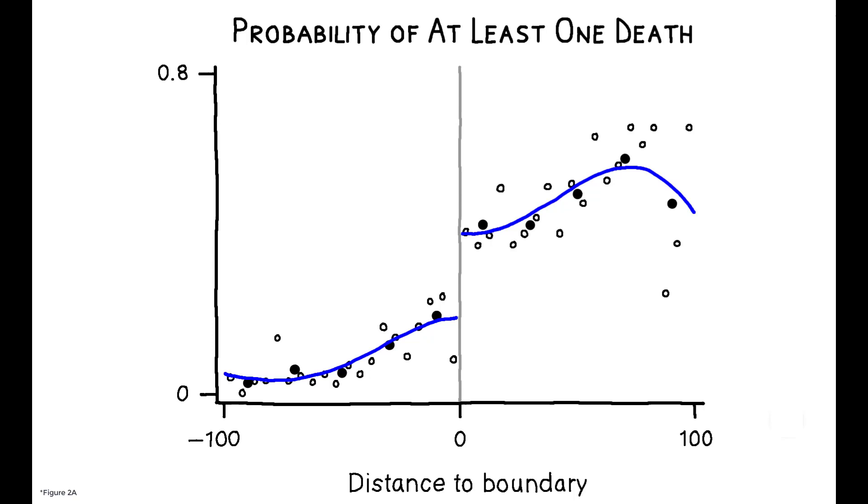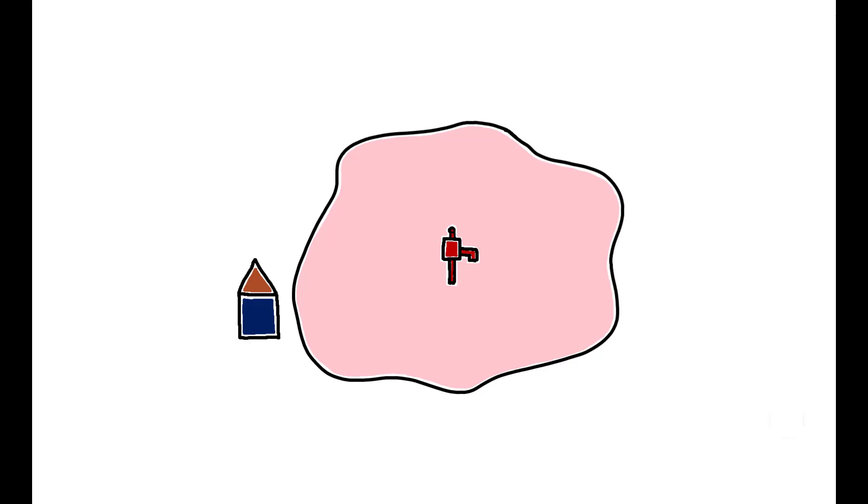This discontinuity suggests a strategy for estimating the causal effect of the outbreak. If exposure differs sharply on either side of the boundary, but other attributes don't, properties just outside the boundary can serve as a control group for those just inside the boundary.